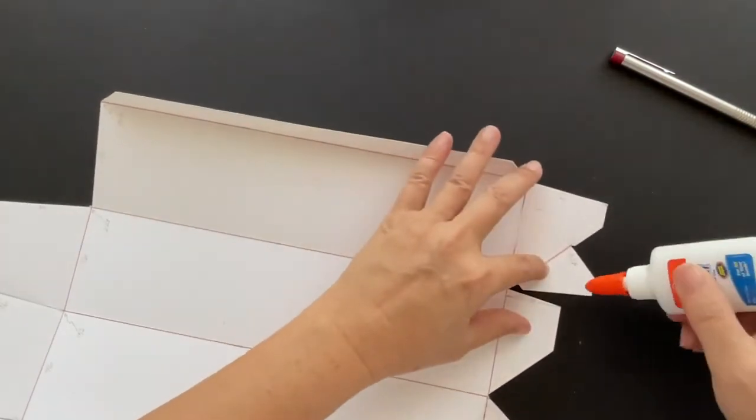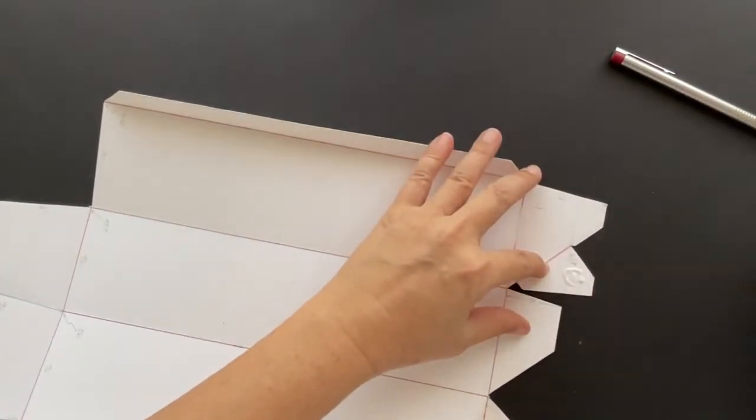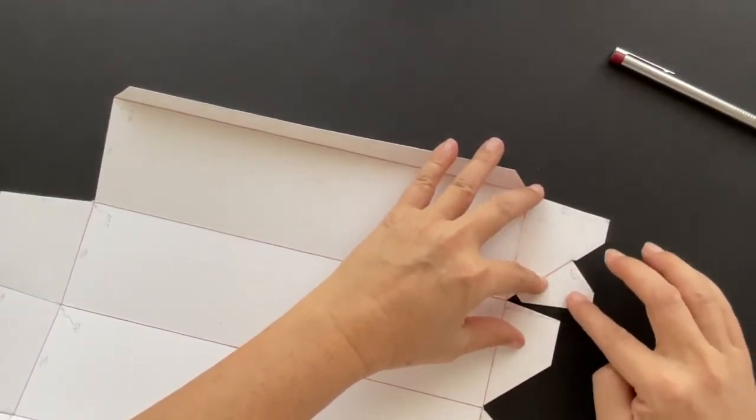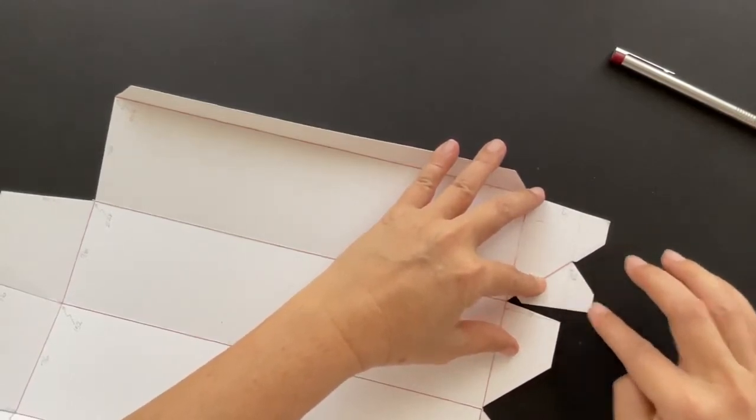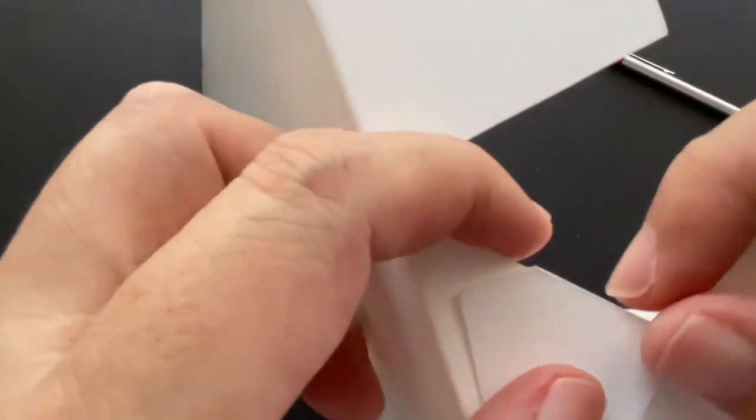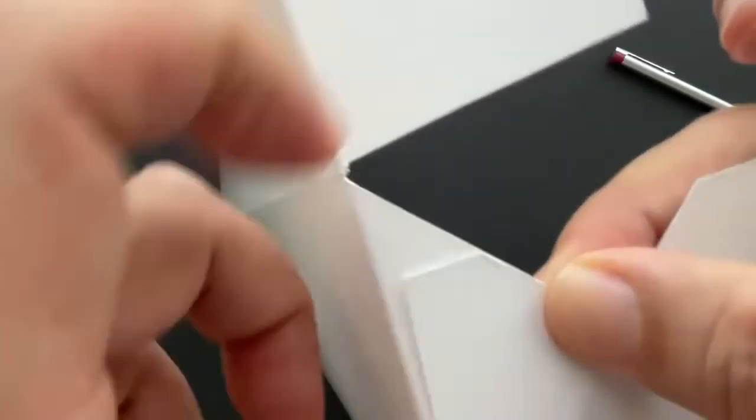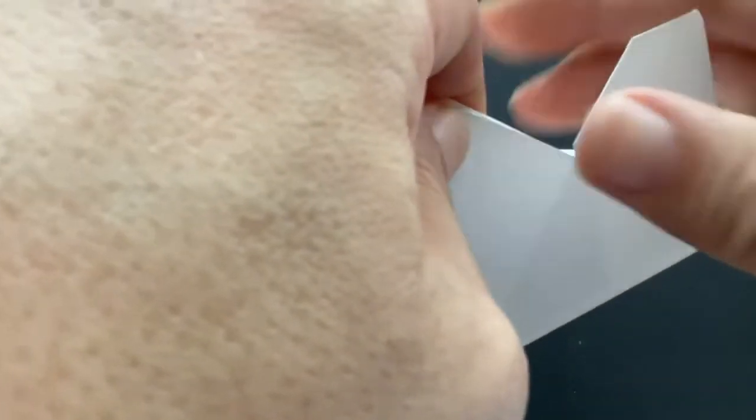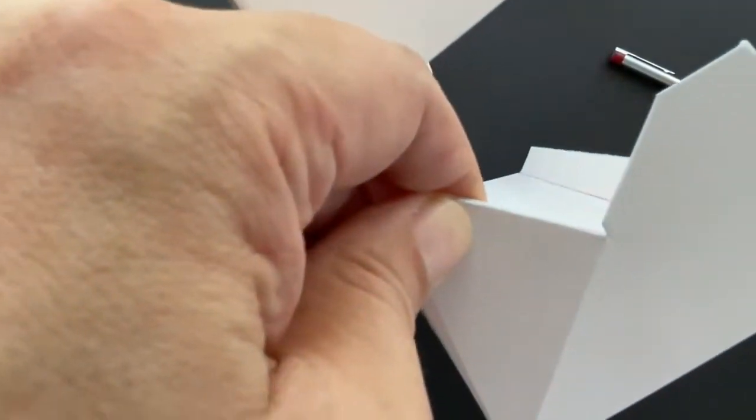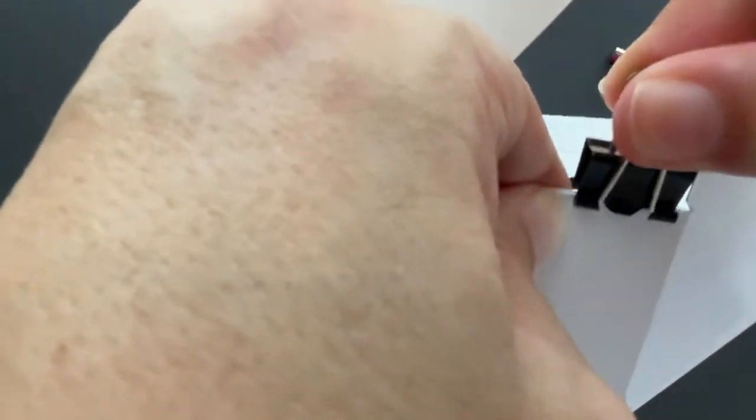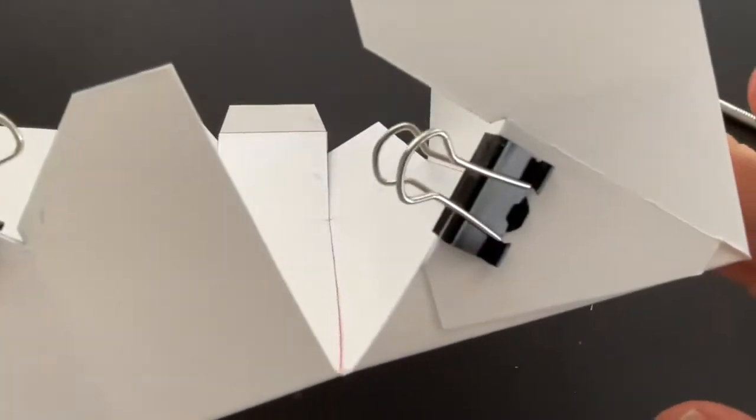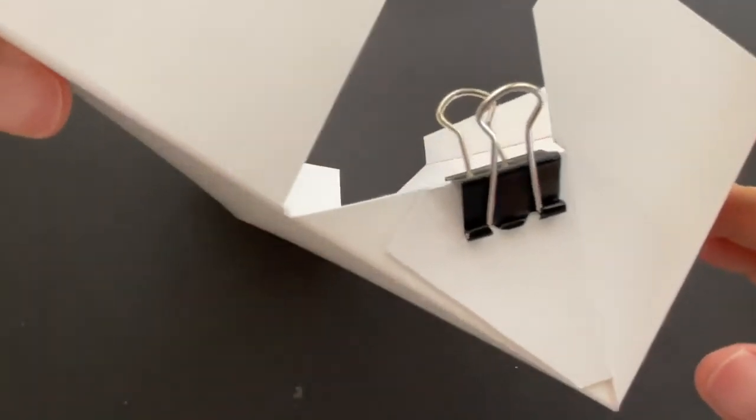This side is exactly the same as the other side. Make sure the two flaps are aligned. Let's put the paper clip. After you've done, let it dry from 5 to 10 minutes.